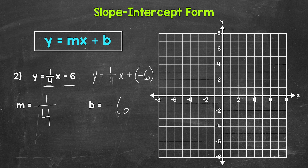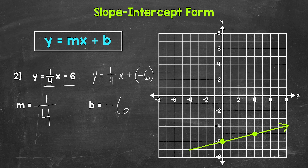Now let's graph and we'll start with the y-intercept, which is negative 6. So we need a point right here at (0, negative 6). Now we use our slope, 1/4 — rise of 1 and run of 4, positive 1 and positive 4. So we go up 1, to the right 4. And our second point on the line is right here. Now we draw our line through the two points and we are done.